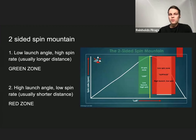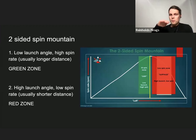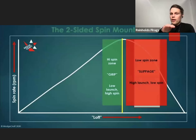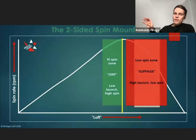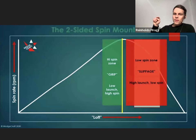What they found is that you have to master what's called the two-sided spin mountain. On the horizontal axis is loft — increasing loft — while spin rate is on the vertical axis. The green zone is low launch with lower loft at impact, giving higher spin rate. The red zone on the right is higher loft, higher launch, with lower spin rate. These are two opposite shots with different trajectories and spin amounts.